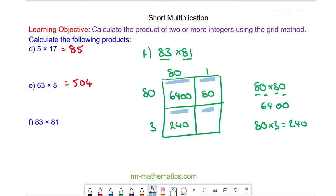And here we have 3 times 1 which is 3. So our total area is 6400 plus 240 plus 80 plus 3. So 6723.